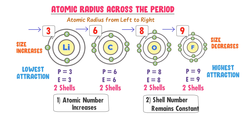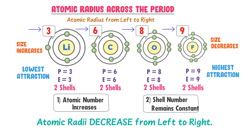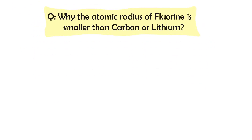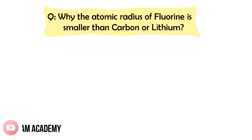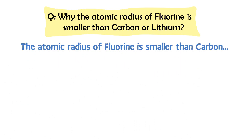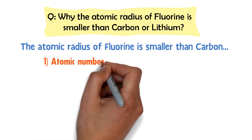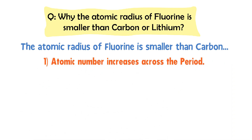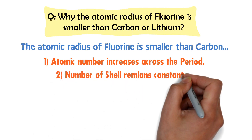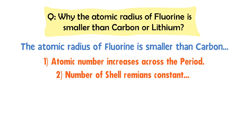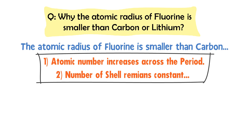To conclude, atomic radius decreases across the period from left to right in the periodic table. Why is the atomic radius of fluorine smaller than carbon or lithium? Because atomic number increases across the period while the number of shells remains constant. Thus, atomic radius decreases across the period because atomic number increases and the number of shells remains constant.